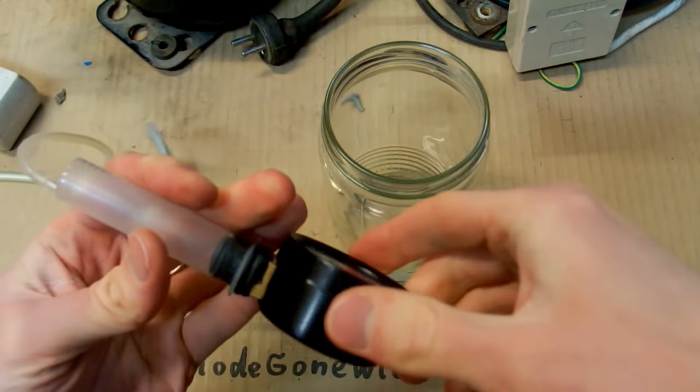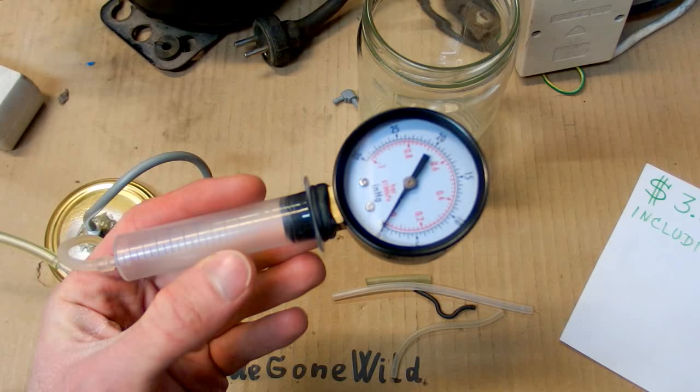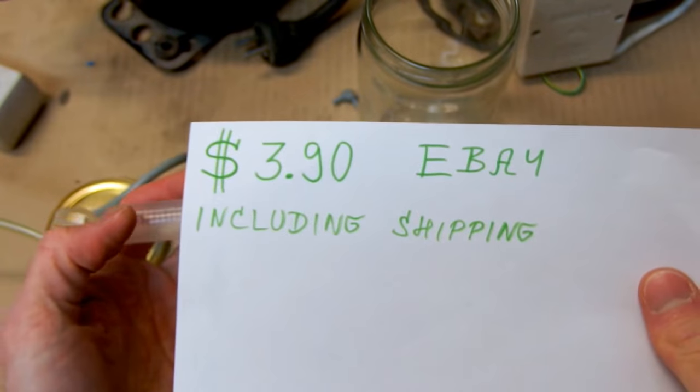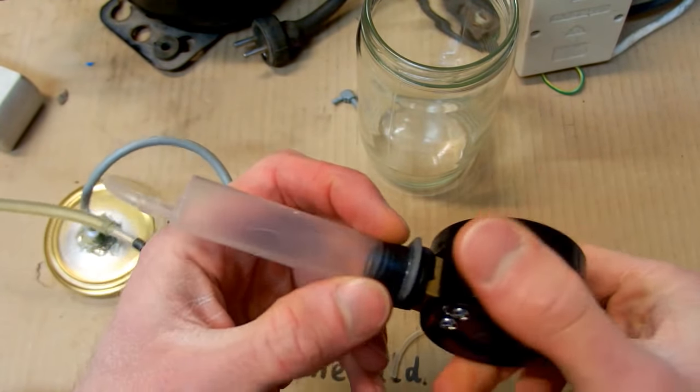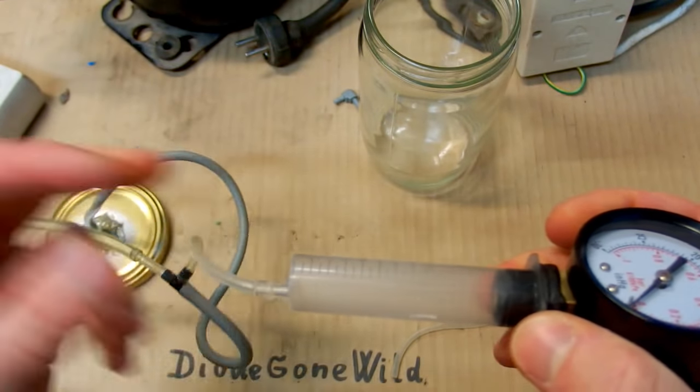And here you can see my vacuum gauge. The vacuum gauge is from eBay. It cost me only about 3 dollars 90 including shipping and it has a screw on it which is not very useful for me because I have to put a hose on it.